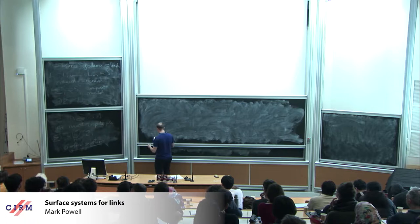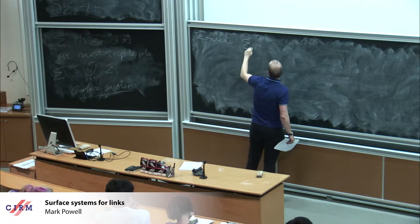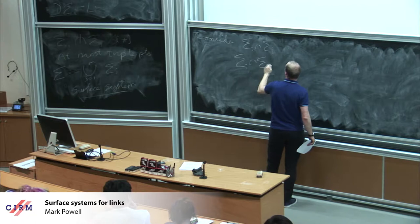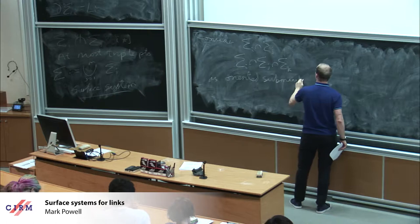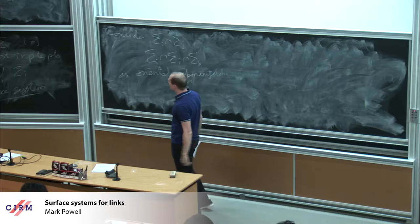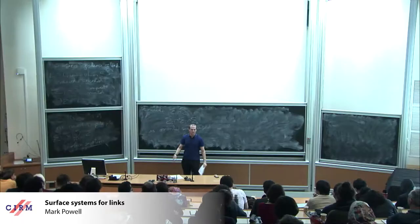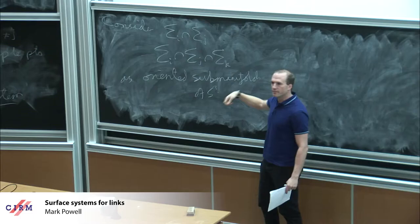There's one other bit of information you should always remember. We should consider the intersections and the triple intersections as oriented sub-manifolds of the 3-sphere. I have orientation of the link, and that gives me an orientation of these surfaces. If there are closed components, add orientations of those. Then I get induced orientations on the intersections and triple intersections.